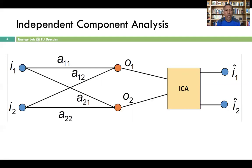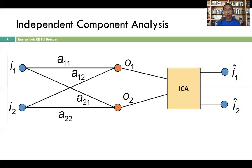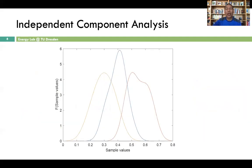Despite the difficulty in justifying this assumption, most existing approaches using ICA assume some type of distribution — for example, a uniform distribution. Most approaches in EEG, ECG, and EMG analysis propose the use of ICA, but we cannot confirm this assumption by simply looking at experimental data.